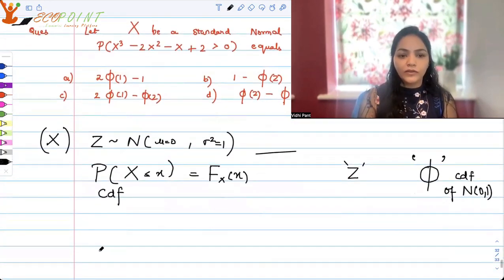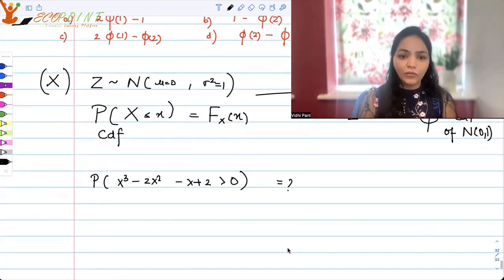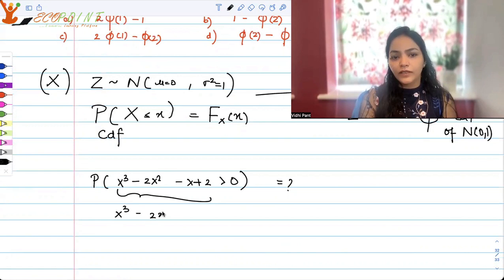So we have to concentrate on figuring out the probability that X³ - 2X² - X + 2 is greater than 0. What is this probability? Now, for this, I need to know what kind of X's will satisfy this inequality. So X³ - 2X² - X + 2, let's just concentrate on this.